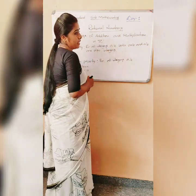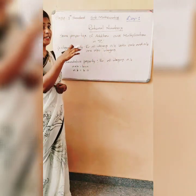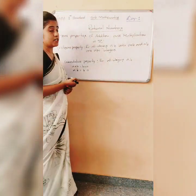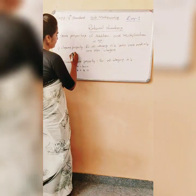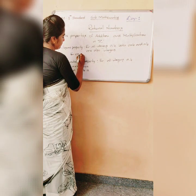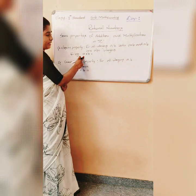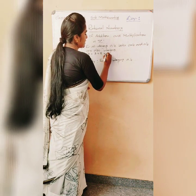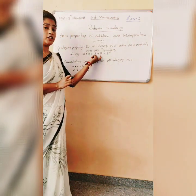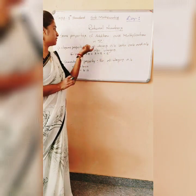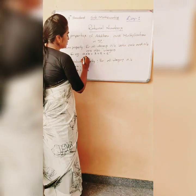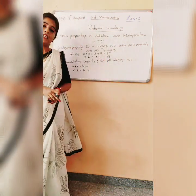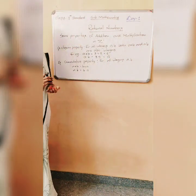For all integers A and B, both A plus B and A into B are also integers. For example, taking A as 3 and B as 5, A plus B gives a sum that should be an integer — the sum of two integers should always be an integer. Similarly, A into B, that is 3 into 5, gives 15, which again is an integer. This is what the closure property states.